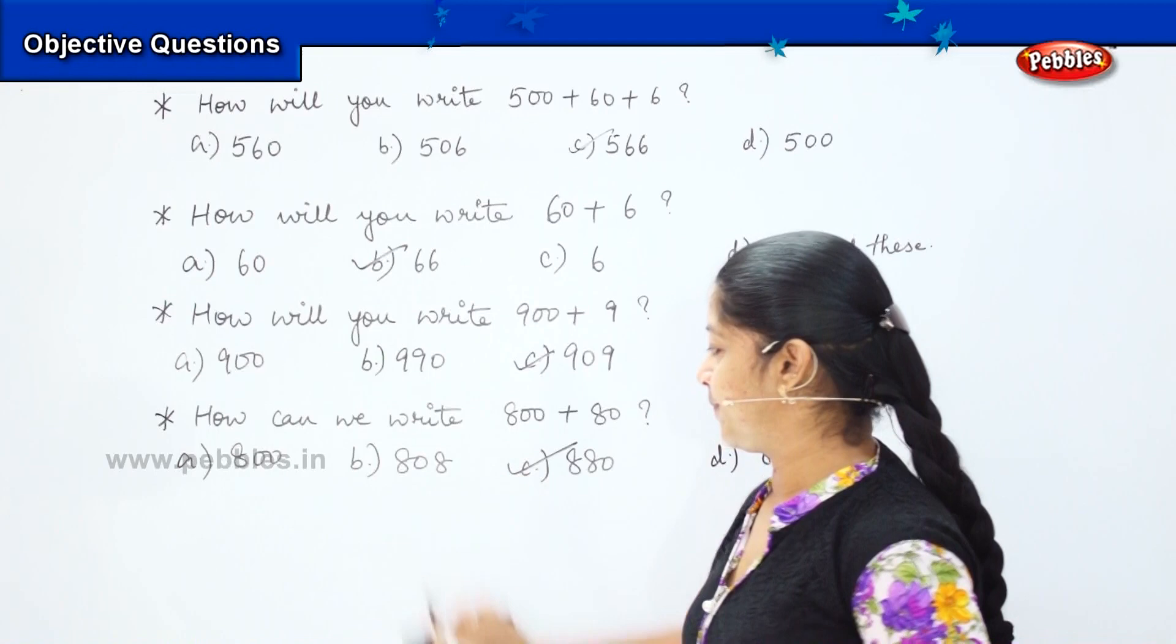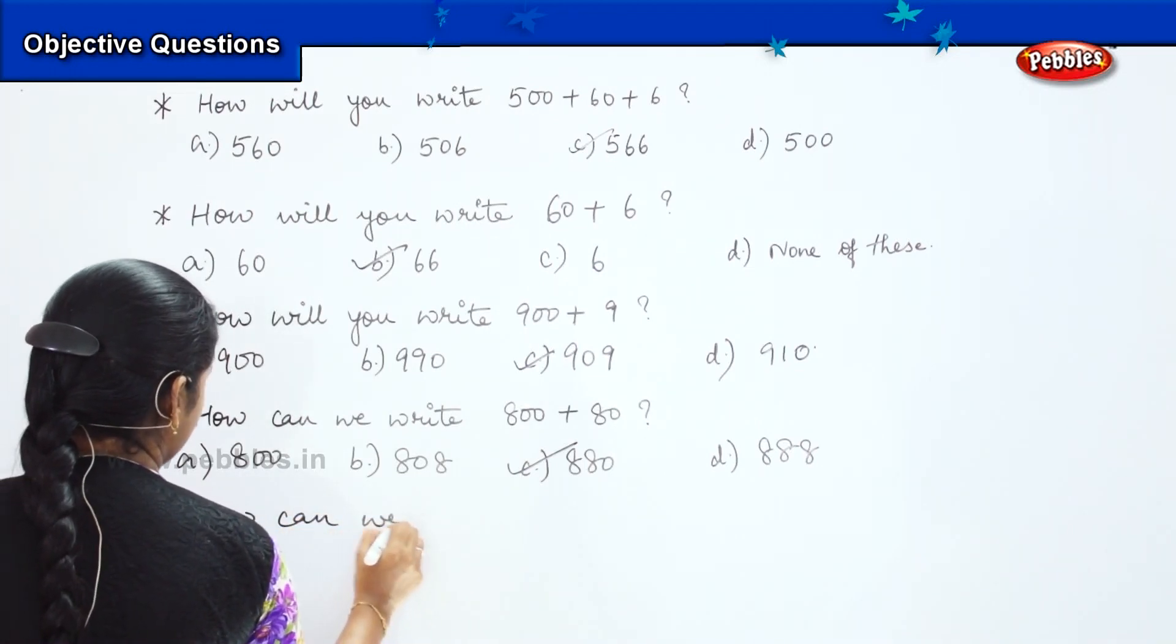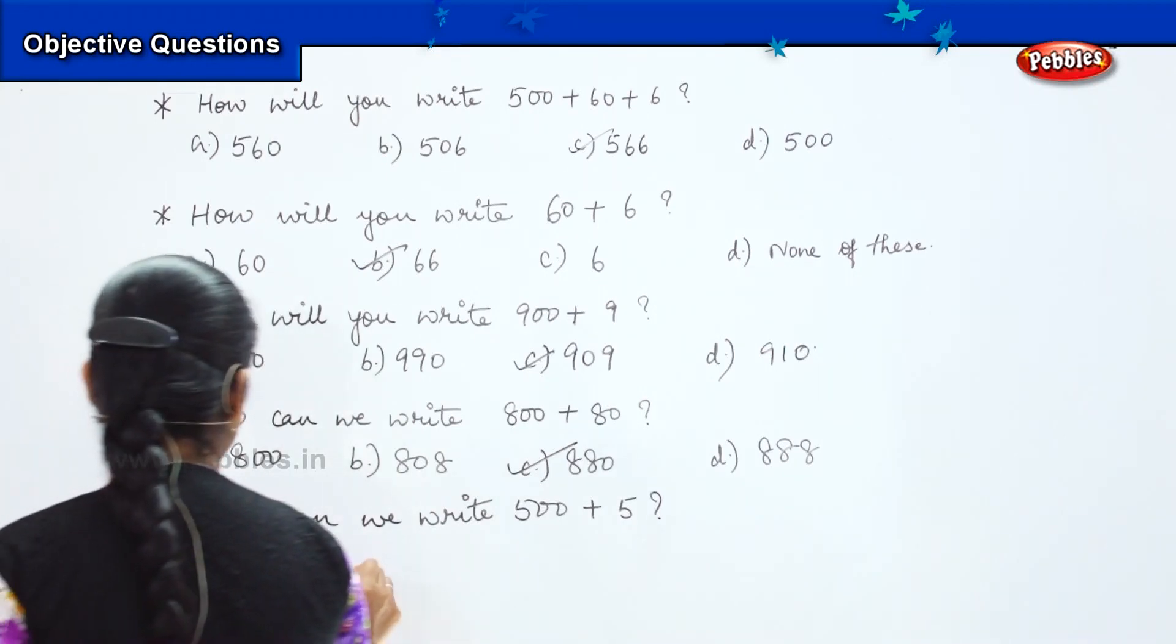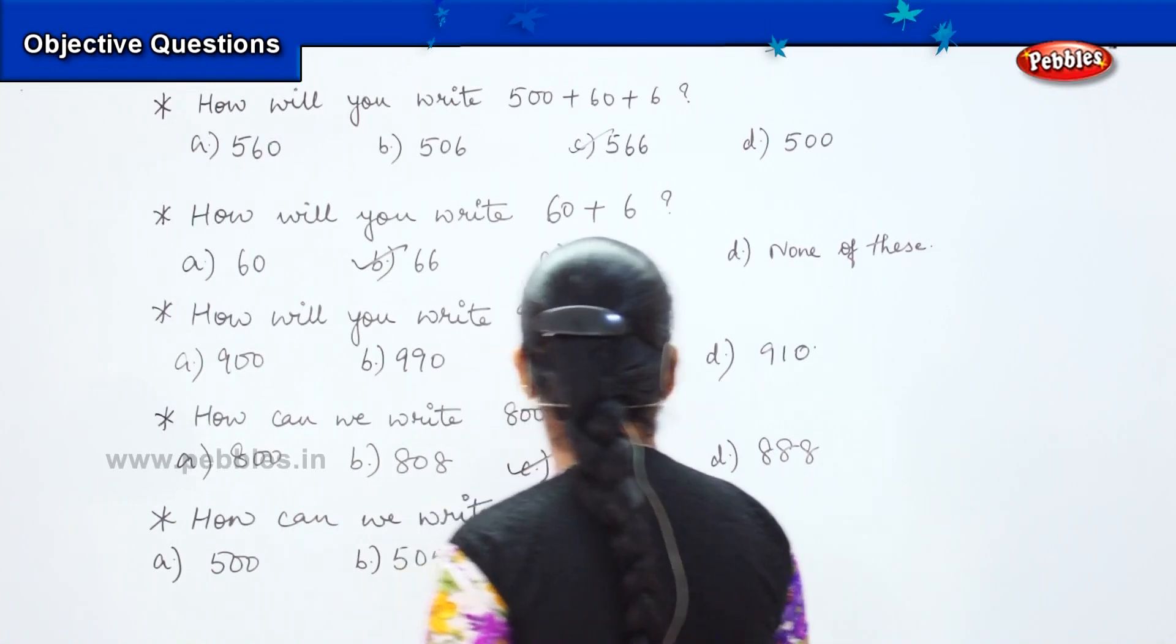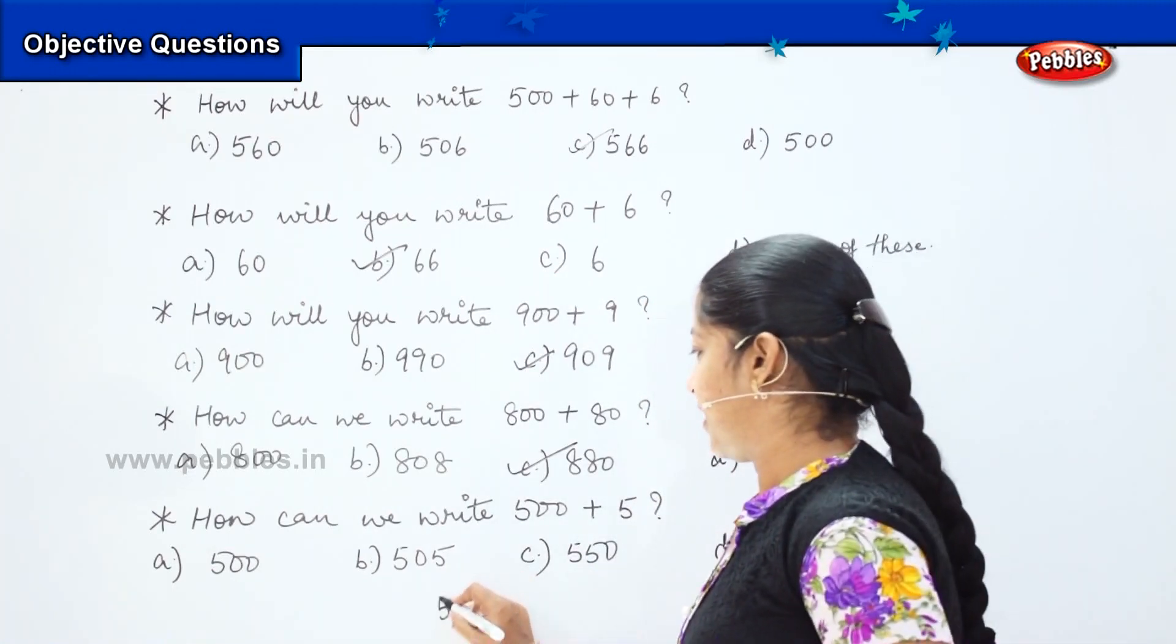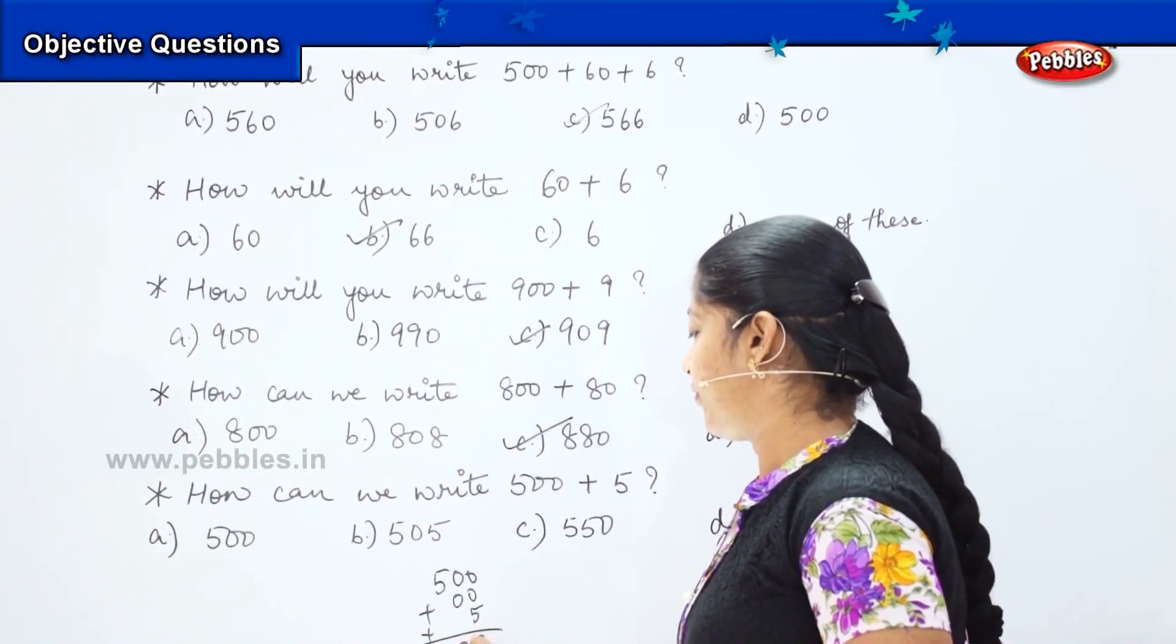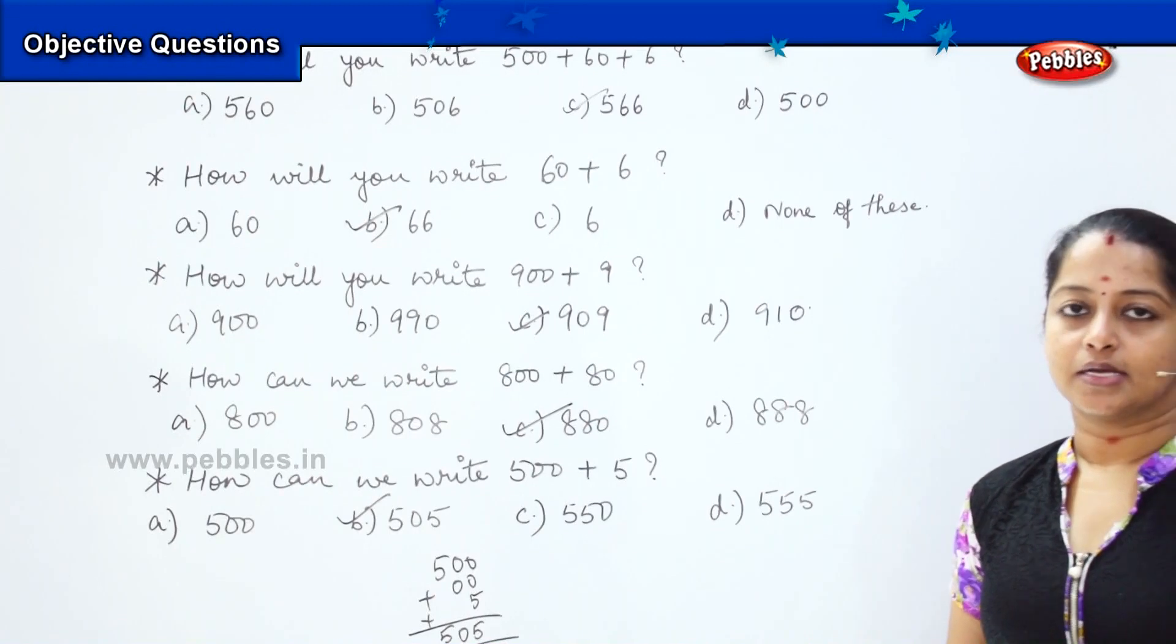Shall we have few more sums of this pattern? Here is your next question. How can we write 500 plus 5? And my options are 500, 505, 550, and 555. So how will you write it? 500 plus. Do you have anything in tens? No. So we will put it as 0. And do you have anything in ones? You have a 5. So it will be 505. So where can you find this option? It is option B. So option B is my right answer.